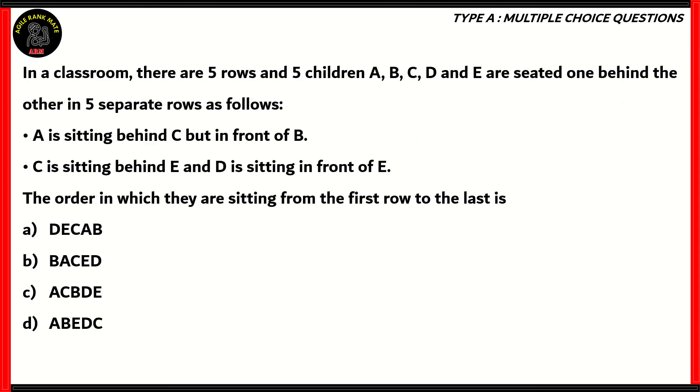Now, let's look at the final question for the day. In a classroom, there are five rows and five children, A, B, C, D, and E. They are seated one behind the other in five separate rows as follows. A is sitting behind C, but in front of B. C is sitting behind E, and D is sitting in front of E. Now, we need to find out the order in which they are sitting from the first row to the last. Is it D, E, C, A, B, B, A, C, E, D, A, C, B, D, E, or A, B, E, D, C?